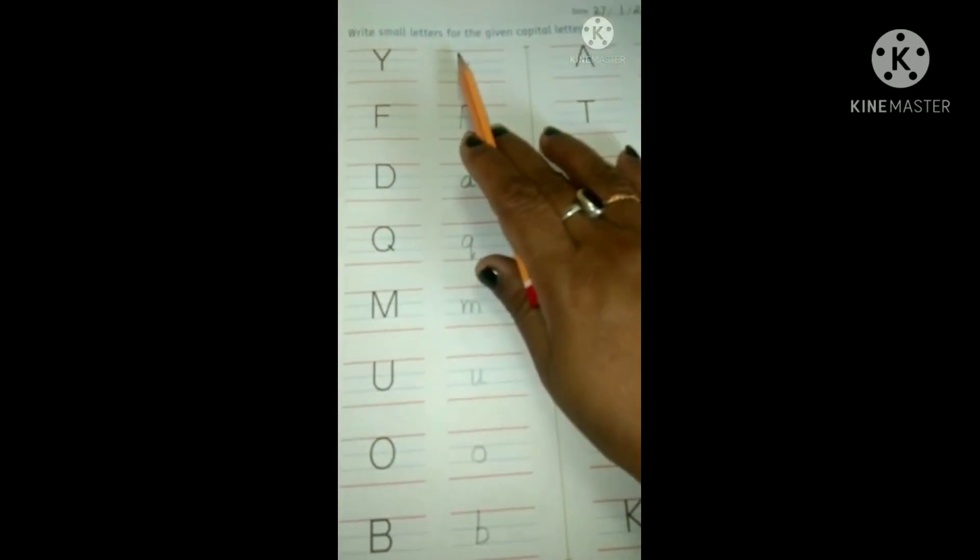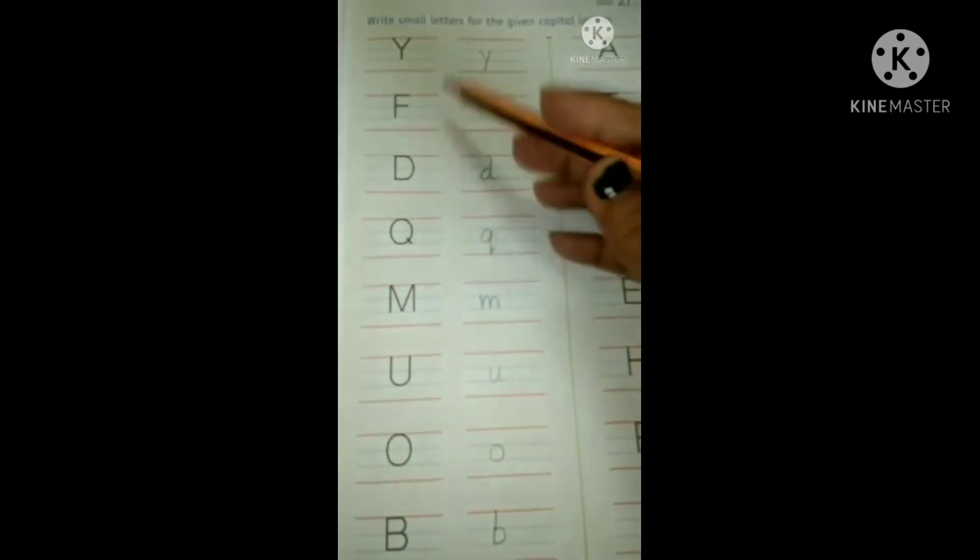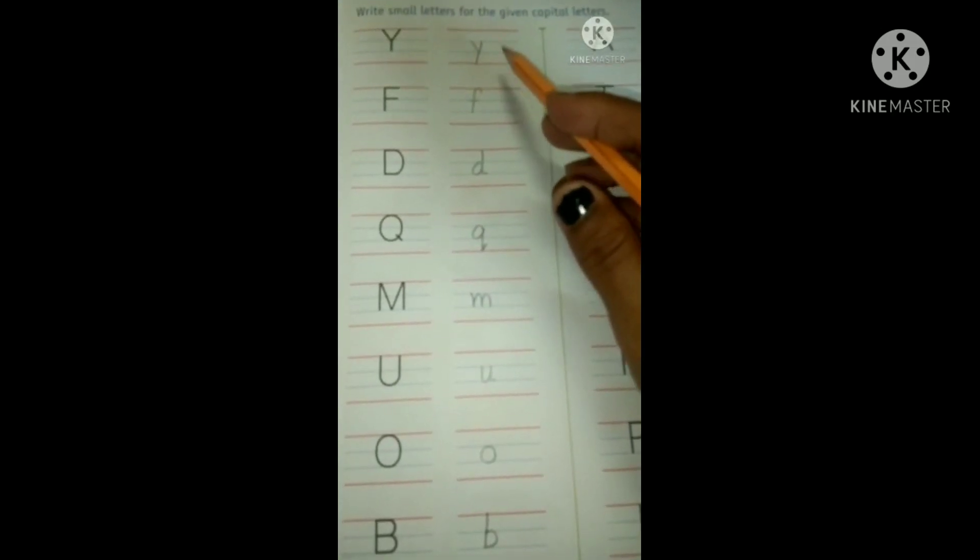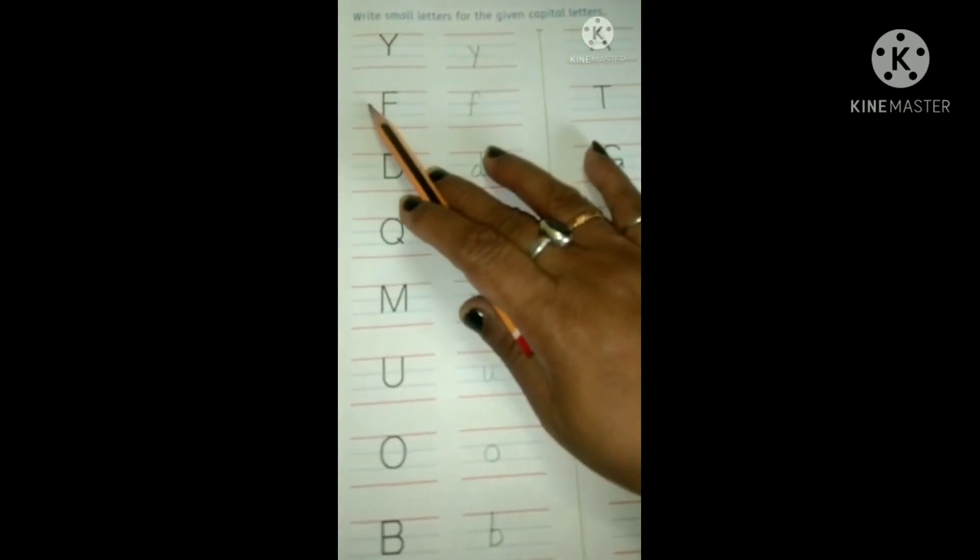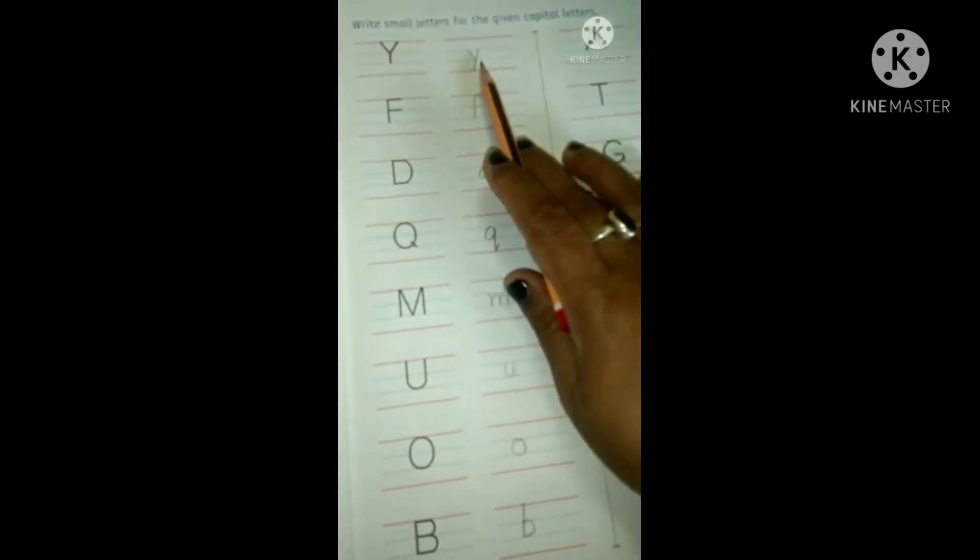Now, see write small letters for the given capital letters. We have capital letters on this side and we have to write the small letters of given capital letters. Now, see what is it? Capital letter Y. So, we will write small letter Y.